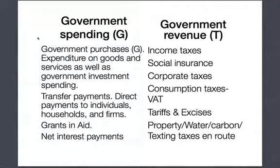Macroeconomically, when we think about a simple macro model, government spending is on goods and services, investment capital expenditure, transfer payments, grants, and net interest payments — which is the servicing of the debt. On the revenue side, the government gets money from income taxes, social insurance, corporate taxes, consumption taxes, tariffs, and now we're bringing in property, water, carbon, and other taxes. Probably if they could tax breathing they would, because the government needs all the revenue it can get.